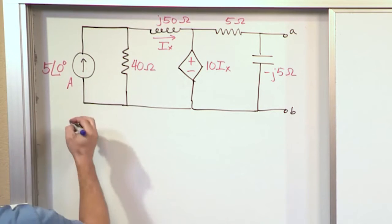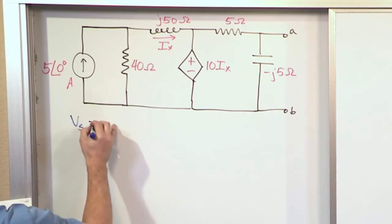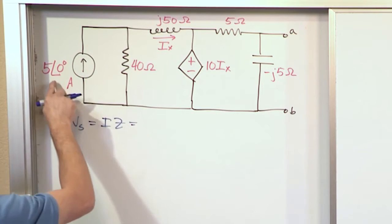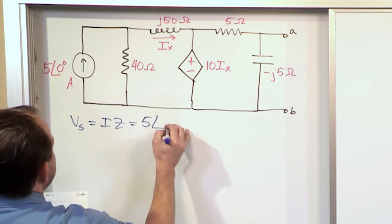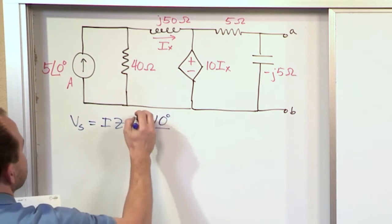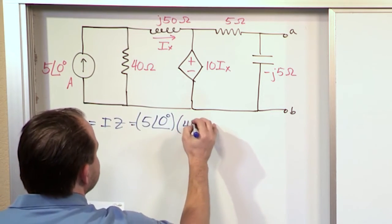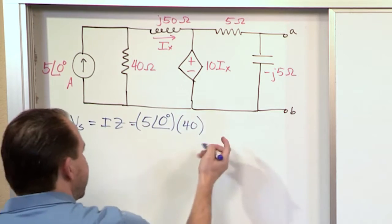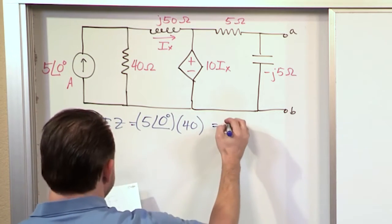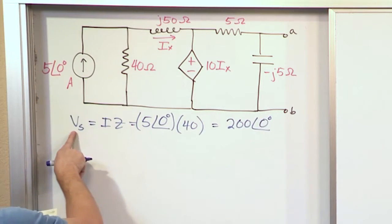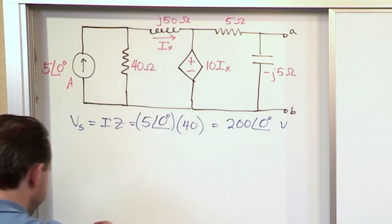In order to find the new value of the voltage source, V equals I times Z. The I, which is the current, is 5 amps amplitude at an angle of 0 degrees, and it's times a 40 ohm resistance. So it's just times 40. And when you do that in your calculator, it's very simple. You can just see it's going to be 200, again, at an angle of 0 degrees. And this is a voltage, so that's going to be in terms of volts.